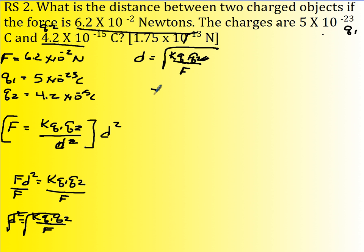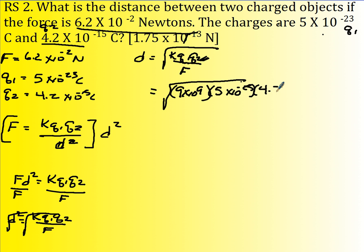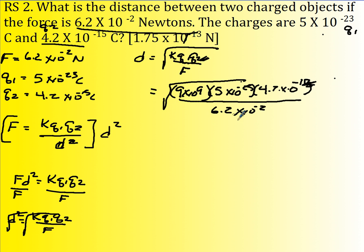So d is the square root of k q1 q2 divided by f. This is the square root of k, which is 9 times 10 to the 9th, times q1 which is 5 times 10 to the negative 23rd, times 4.2 times 10 to the negative 15, divided by the force which is 6.2 times 10 to the negative 2. Multiply your numerator, divide by your denominator, then square root, and you'll get 1.75 times 10 to the negative 13. Make sure you can do this for the test.